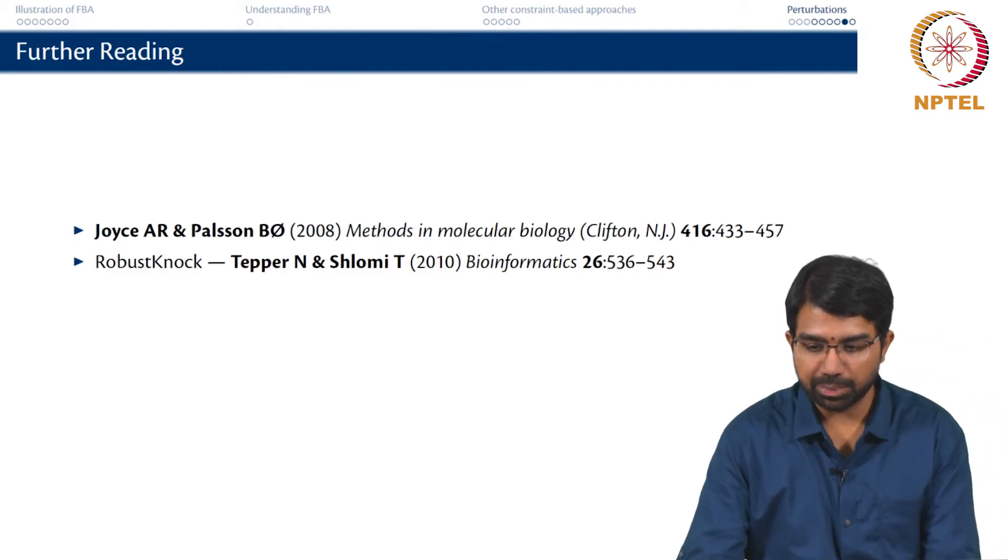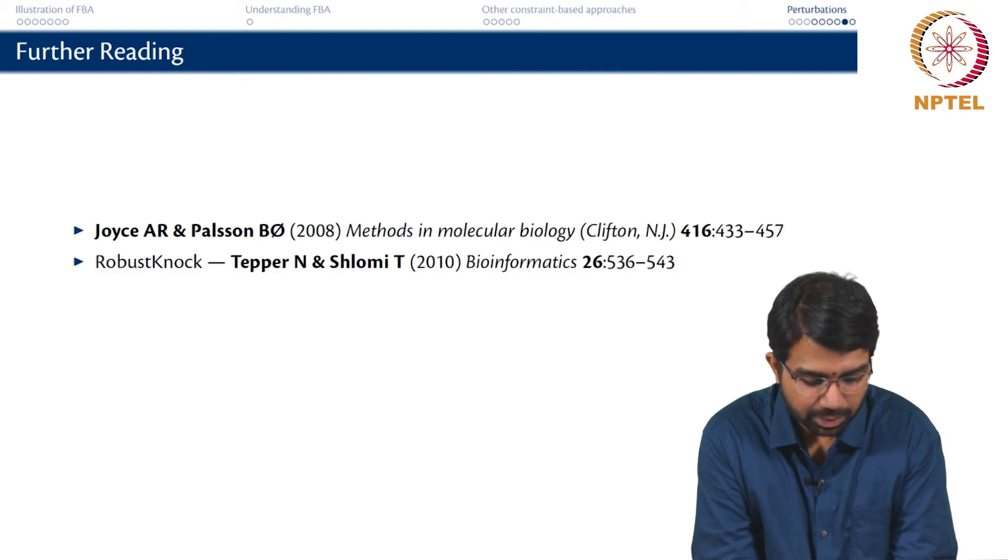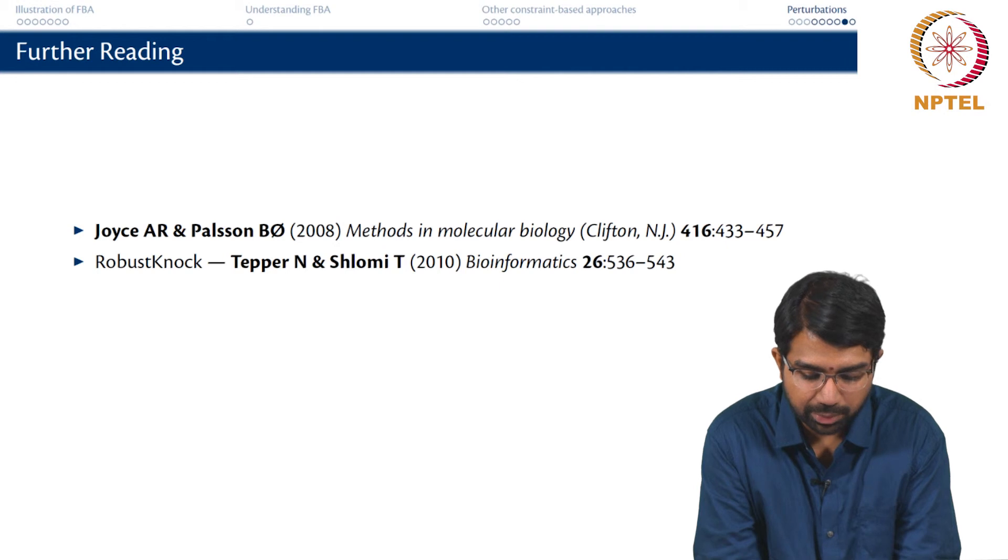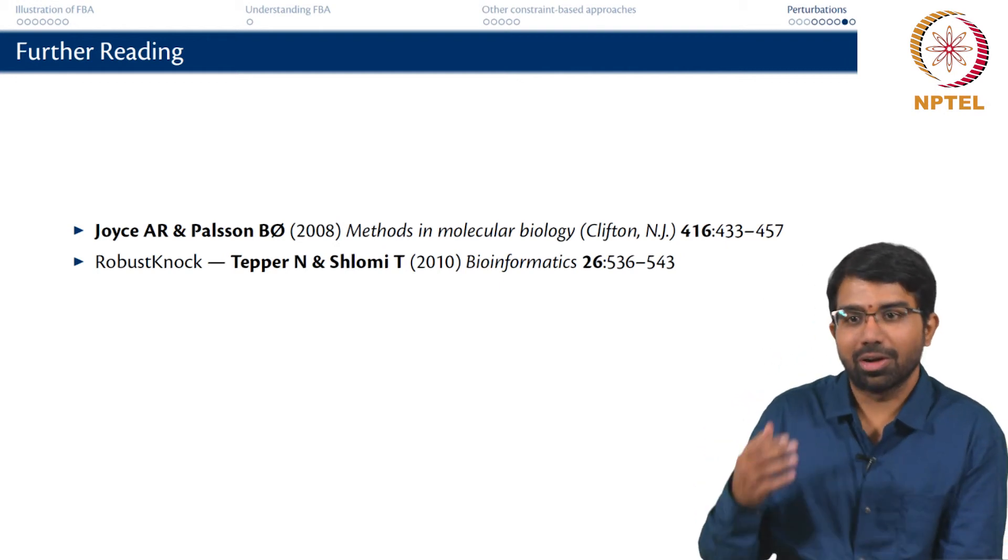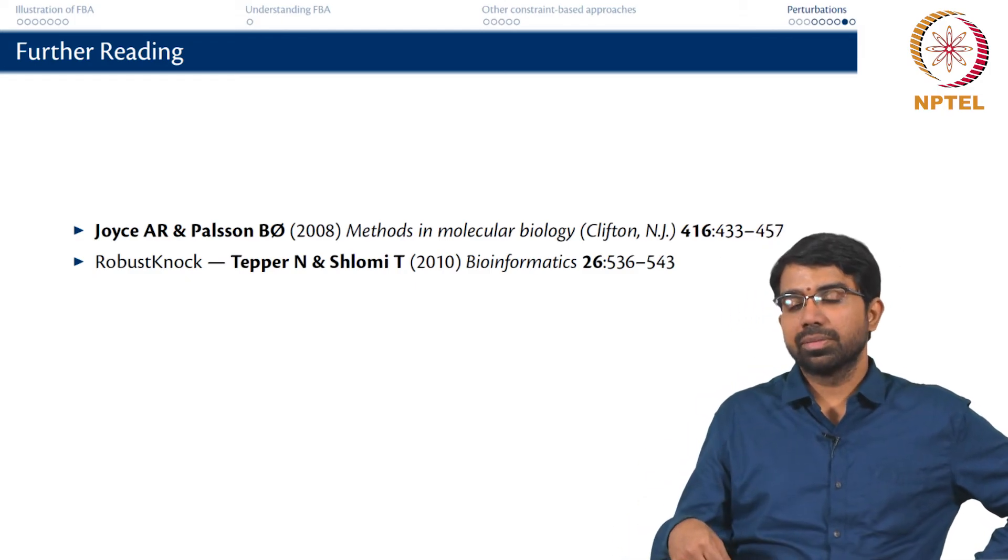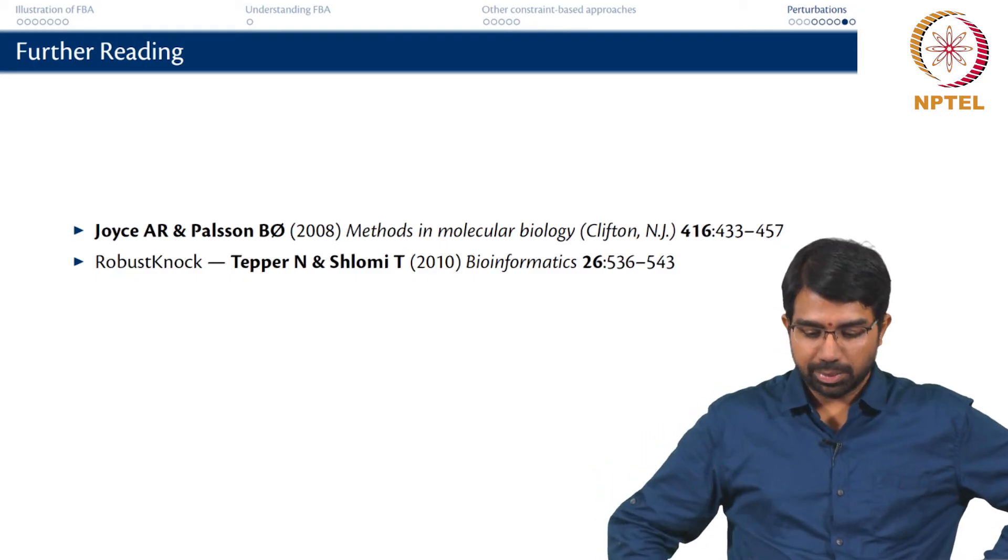These are 2 very good papers which I think you should take a look at. RobustKnock is another tool and the first Methods in Molecular Biology chapter essentially talks a lot about the protocol for doing gene deletion. You set this to 0, then you observe this, what does it mean, when will you get a true positive, true negative. We will try to discuss some of these in the coming class.